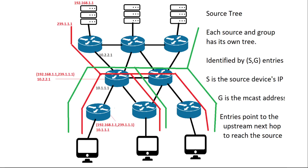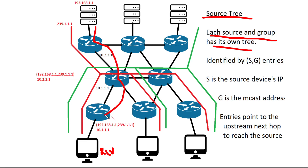Let's talk about source trees and share trees. When you're using source trees, each source tree in a group will be different. For instance, in order for this source to reach this receiver, the path of the multicast traffic could be this, but for another source, the path could be completely different. So these trees are completely different from each other.